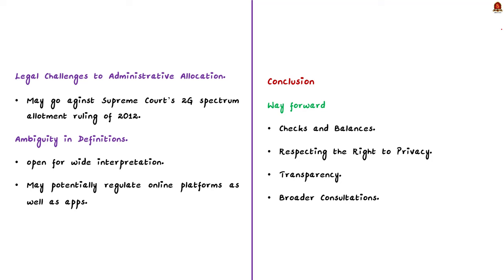For the conclusion, suggest the following way forward: Firstly, checks and balances — only a declared national emergency under Article 352 of the Constitution should trigger executive action, and any such action must require parliamentary approval. Secondly, respecting the right to privacy — message interception and service suspension must align with fundamental rights like the right to privacy. Thirdly, transparency — the government must address privacy concerns with an open mind and conduct rule-making with absolute transparency and consultation. Such amendments can make the act more relevant to the telecom sector.